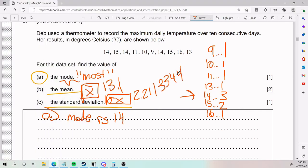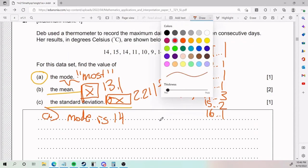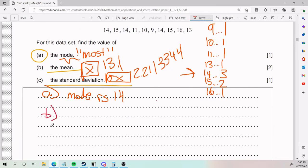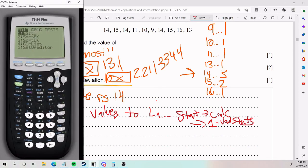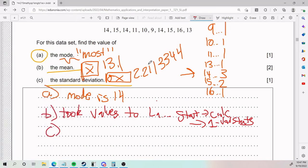That is for parts B and C. If you're worried about getting like full credit, for parts B and C you need to literally say like took values to L1, and then stat, calc, one var stats. And so what you're doing here is that you're describing to whoever's grading like what steps you took on the calculator. And that, trust me, is good enough. That's what I did on my IB exam, I got full credit, all good. So that's what I put for part B, part C, and of course, well you put the answers. All right, so that is number two.